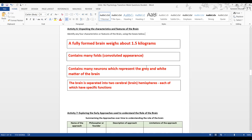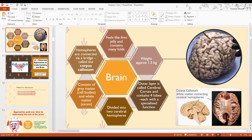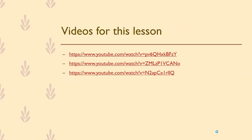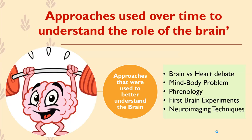Hopefully you've jotted that down — remember to keep saving your document. The first proper topic in your book is 2a, which looks at historical approaches to understanding the brain. Before we look into more complex topics, we need to understand historically how the brain was viewed and how people had different views about what the brain did. We're not going to go through all of them today — just the first three: the brain versus heart debate, the mind-body problem, and phrenology.